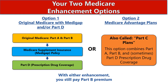In reviewing your two options: Option 1 is Original Medicare Parts A and B, plus a Supplement Policy and a Standalone Drug Plan. Option 2 is a Medicare Advantage Plan or Part C plan, which combines Part A, Part B, and sometimes Part D all into one. With either enhancement option, you would still pay your Part B premium.